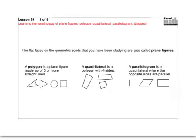Hello again kids, this is lesson 39 of the fourth grade Excel and we're going to be learning a lot about geometry today. This is going to be a long and very challenging lesson. You need to be patient and stick with it all the way through, because this is going to be stuff you'll see over and over again. We're going to learn some terms and words that have to do with geometry.